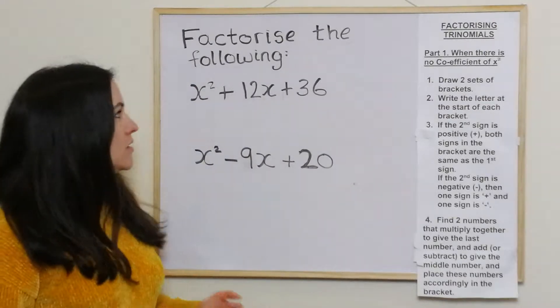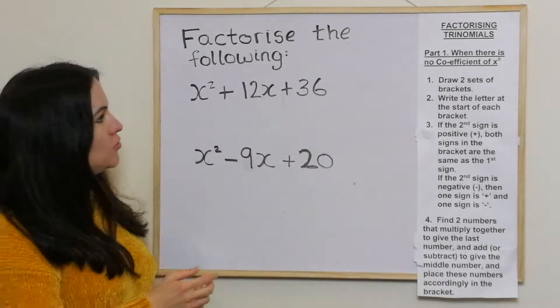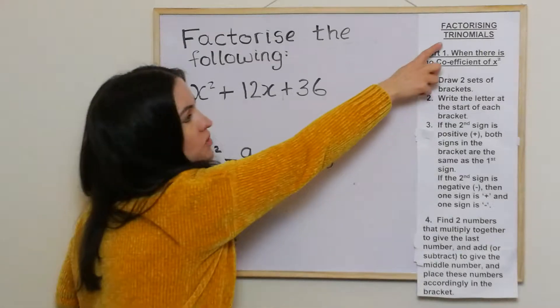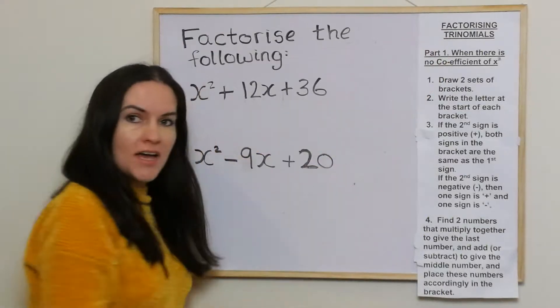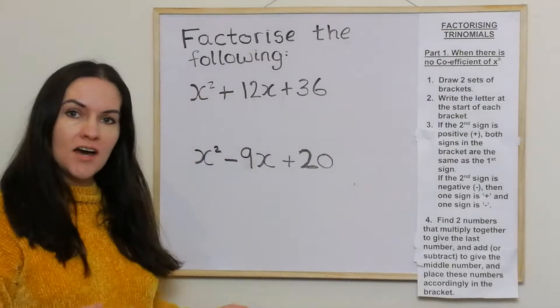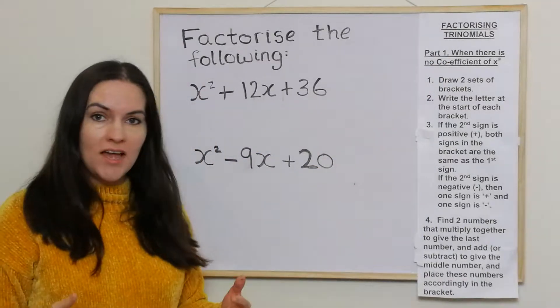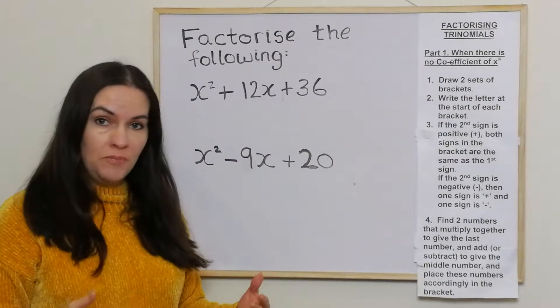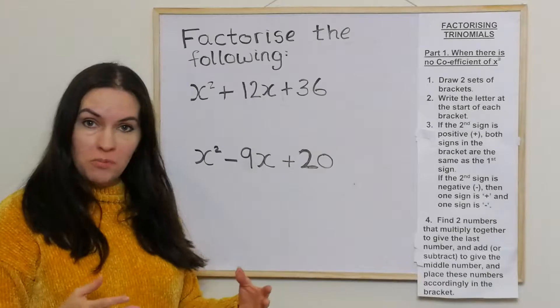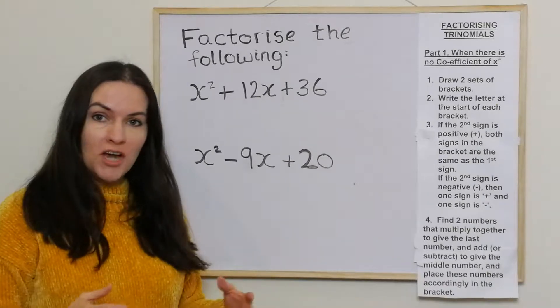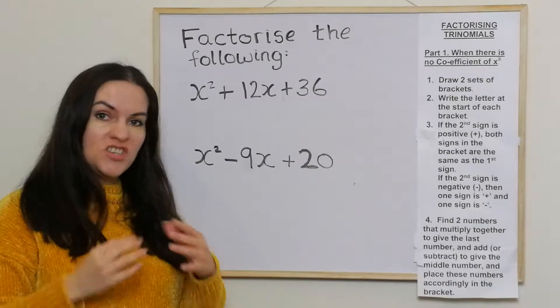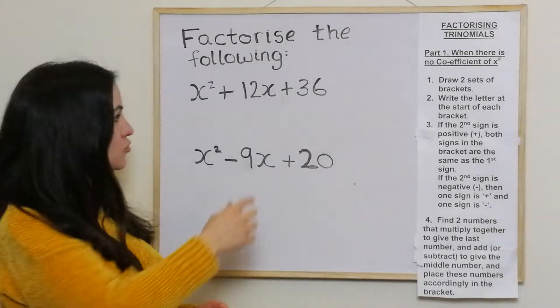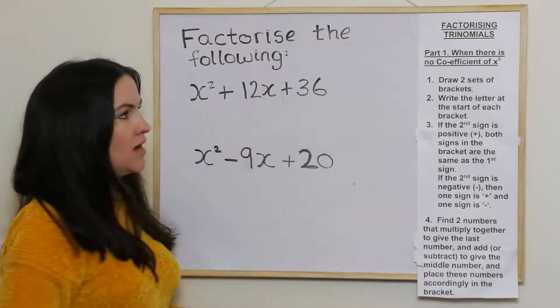I'll just point out the word trinomial — tri, as in triangle, triple, triplets, tripod — all means three. So this is where you've got three parts to it.